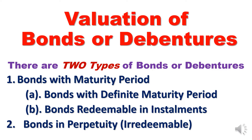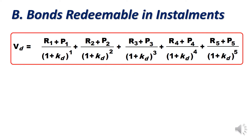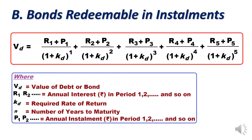In this video we will focus on bonds redeemable in installments and bonds in perpetuity, that is irredeemable. So let's start. For bonds redeemable in installments, the formula for calculation of Vd is: Vd = (R1 + P1)/(1 + Kd)^1, and so on, calculated till the bond is redeemed. Vd is the value of debt or bond, and R1, R2 are the annual interest in rupees for periods one, two, and so on.